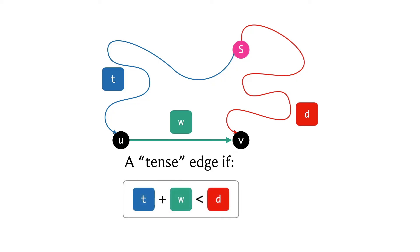We say that this edge is tense if the following inequality holds: t + w < d. Please feel free to pause here and think about what this inequality really means — does it imply that there is something about the way you have stored your distances that doesn't seem quite right, and maybe that's why you're tense, because something needs fixing?